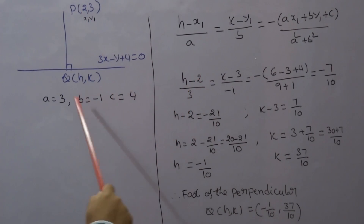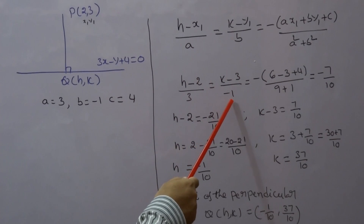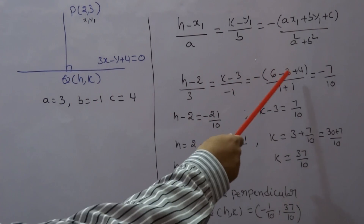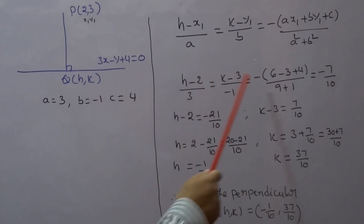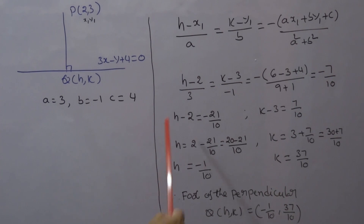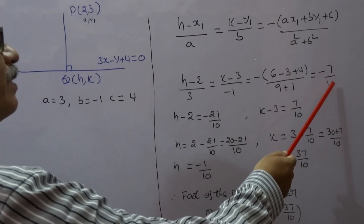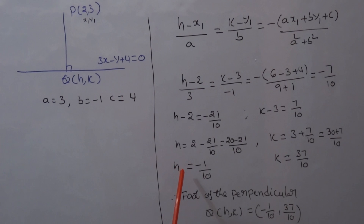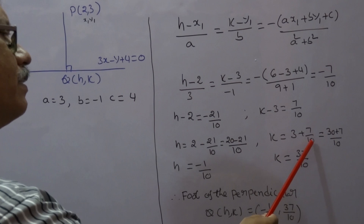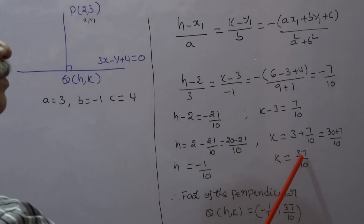Substituting: (H - 2)/3 = (K - 3)/(-1) = -(3×2 + (-1)×3 + 4) / (3² + (-1)²) = -(6 - 3 + 4) / (9 + 1) = -7/10. So H - 2 = 3 × (-7/10) = -21/10, giving H = 2 - 21/10 = 20/10 - 21/10 = -1/10. And K - 3 = (-1) × (-7/10) = 7/10, giving K = 3 + 7/10 = 30/10 + 7/10 = 37/10.